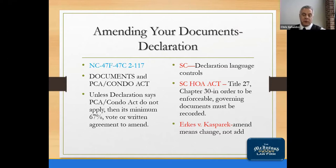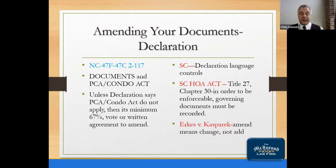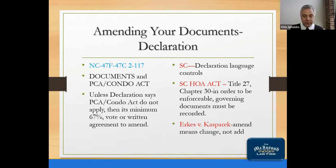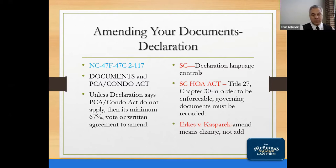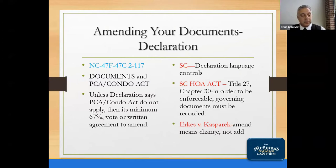In South Carolina, it's completely different — there's no statute on point regarding amendments. The declaration language controls whatever percentage and procedure is set forth in your restrictions or master deed. The South Carolina Homeowner Association Act passed in 2018, codified at South Carolina Code Title 27, Chapter 30, requires that amendments to governing documents be recorded to be enforceable. In North Carolina, you only need to record an amendment to the declaration. In South Carolina, you have to record everything — bylaws, rules — for them to be effective.